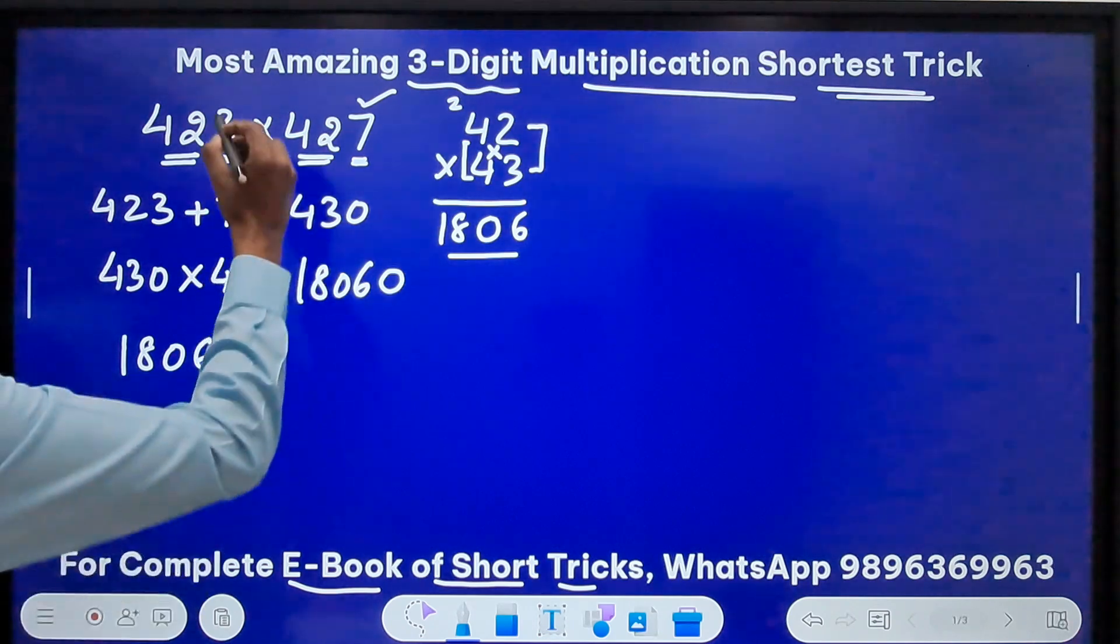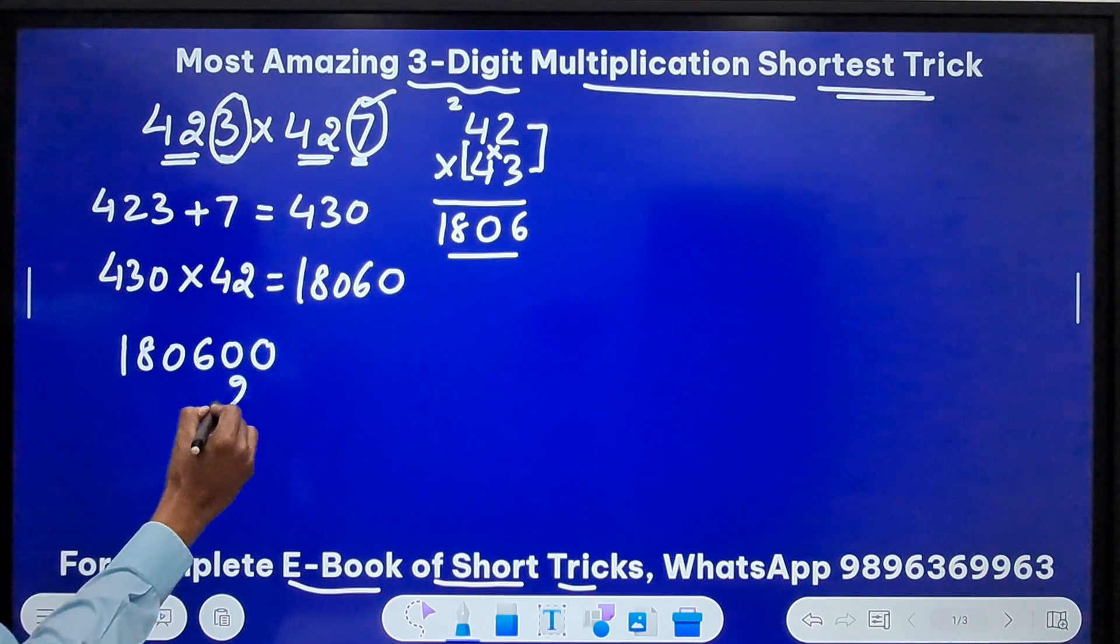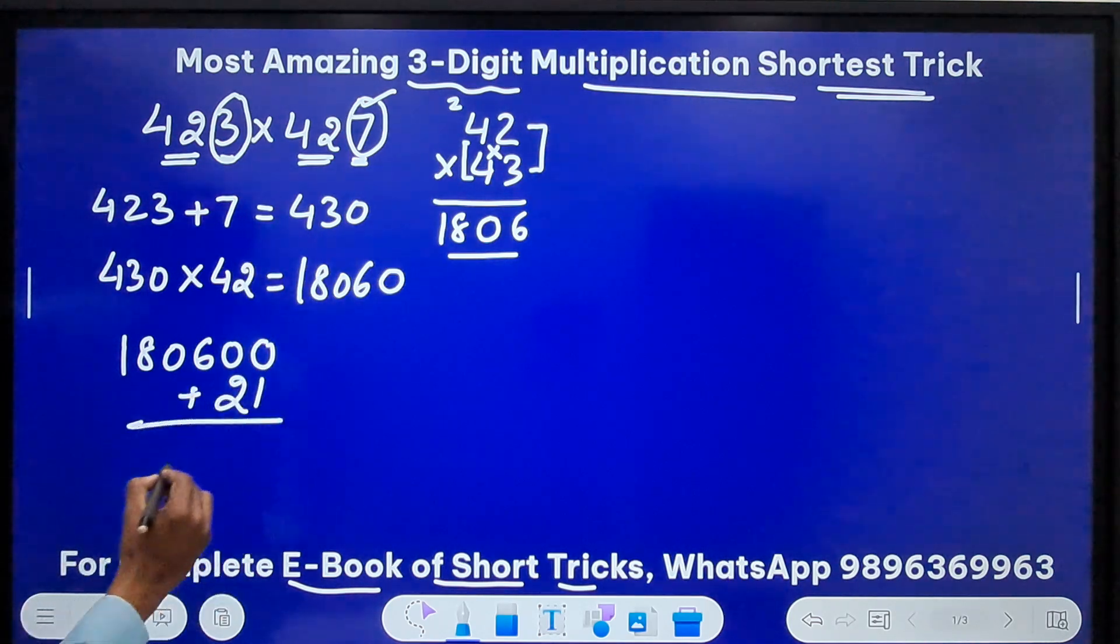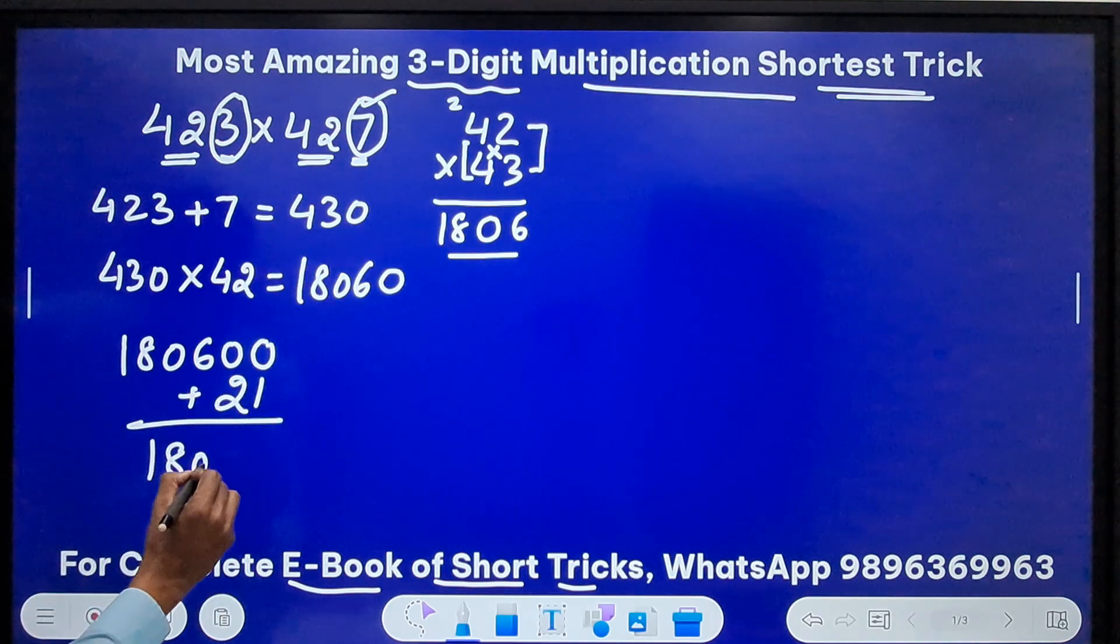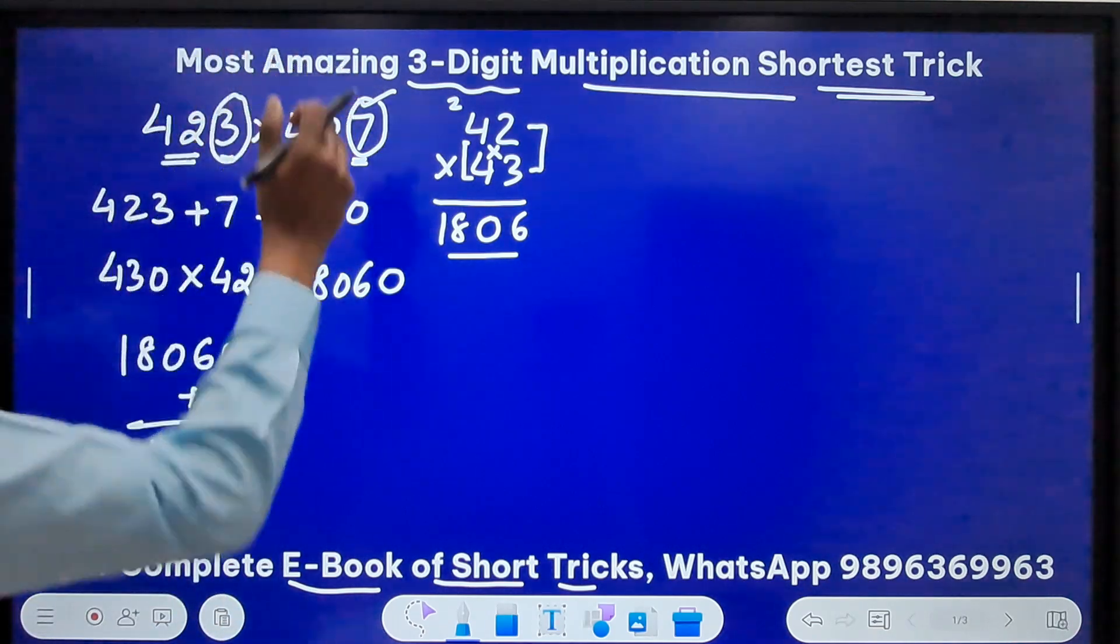So I will write 1806 here. And now whatever I get here, 18060 I will suffix another 0 with this result. Now this is mandatory, we are suffixing 0. And finally take the unit digits 3 and 7, multiply them. 3 sevens are 21. Just add 21 to this. You are going to be surprised.